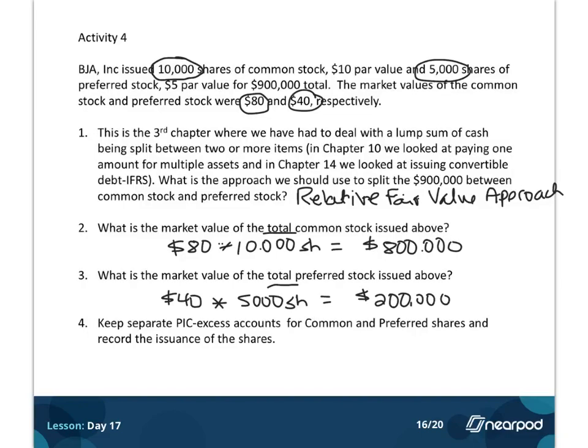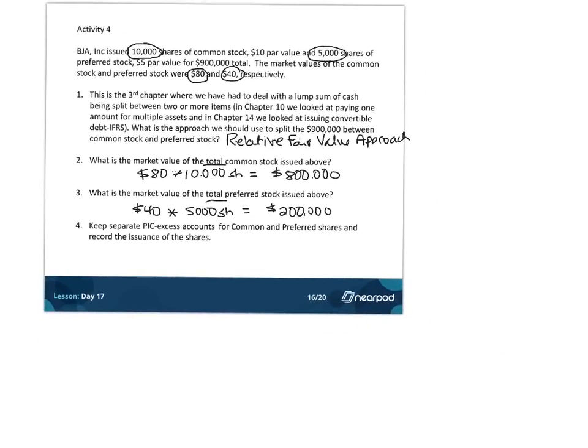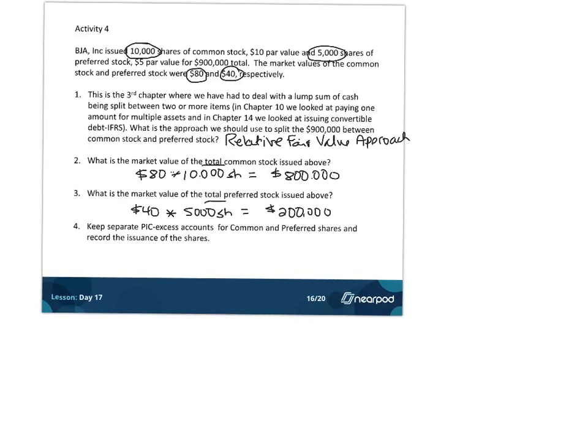Okay, so now you remember how to use the relative fair value approach. I'll give you a real quick rundown. You're going to take the fair values of each, market value means the same thing as fair value, and you'd say, here's common, preferred, $800,000, $200,000. I add those together, and I get a million. And then I say, what percentage of a million is $800,000? This is easy math. If it was more complicated, you'd take 800 divided by a million, and you get 80%. 200 divided by a million, you get 20%.